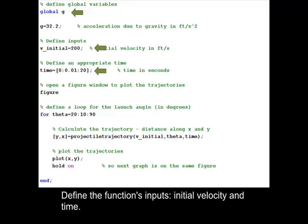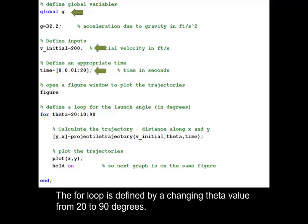Define the function's inputs: initial velocity and time. The for loop is defined by a changing theta value from 20 to 90 degrees.